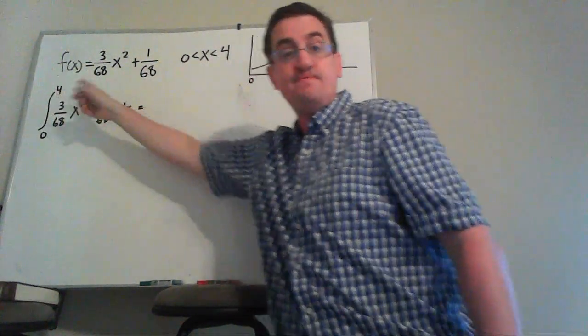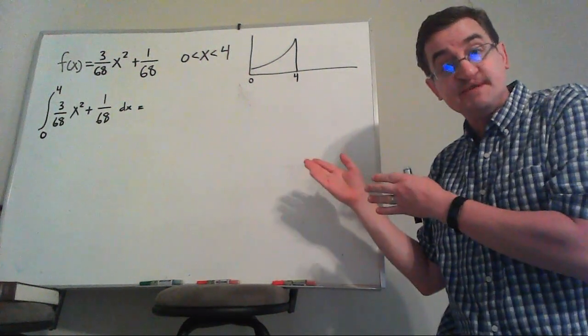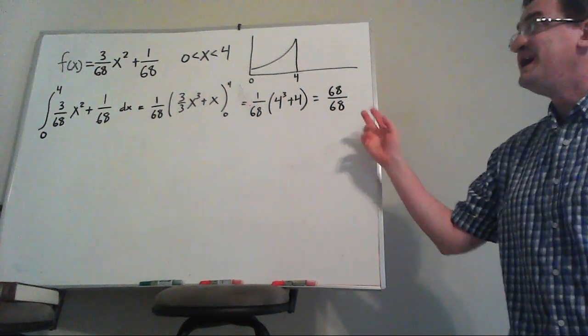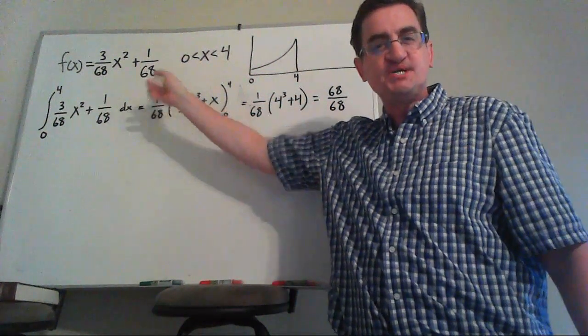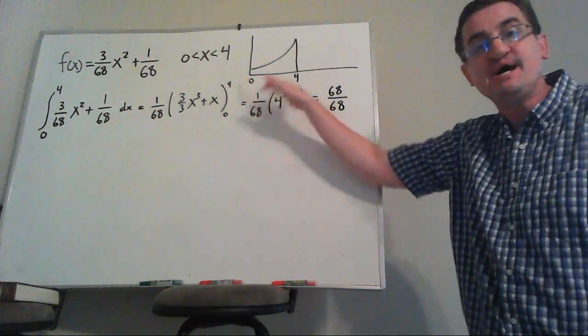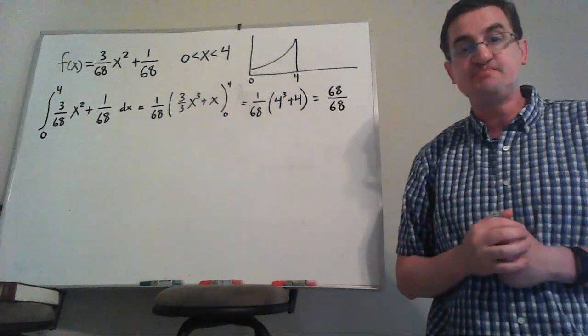So I'm going to integrate from 0 to 4 because that's the range on my x values. And I'm hoping when I solve this, I'm going to end up with a value of 1. And now you can see why we have these weird fractions to start with, because that's how we shrunk the distribution so that the entire area is 100%. This is a real probability distribution.